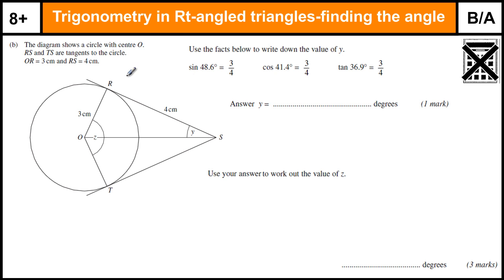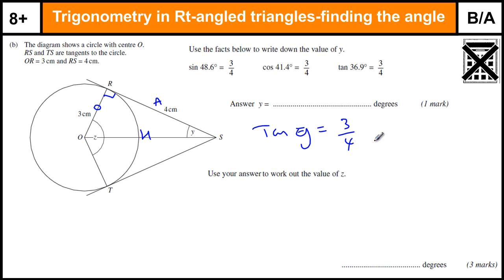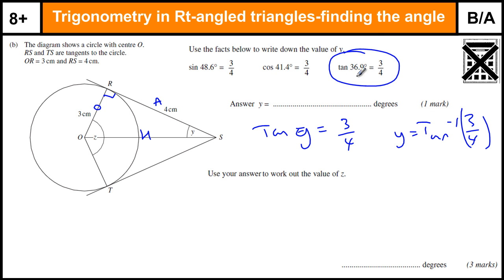This is a harder question because it's embedded inside a circle theorems question. We've got to use the facts to write down the value of y — y is this angle here. The key thing to know is that this line is a tangent, and a tangent is always at right angles to the radius which is 3. So this is our right-angle triangle: this is the hypotenuse, this is the opposite, this is the adjacent. Opposite over adjacent is tan, so tan of y equals 3 over 4. To find y we do tan to the minus 1 of 3 over 4, which gives 36.9 degrees.